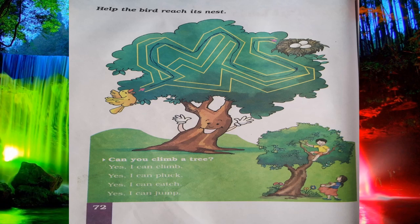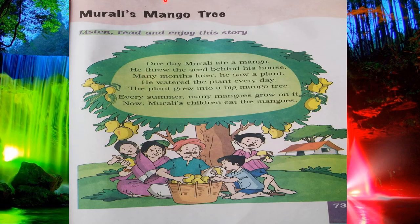Next there is again a poem — it's about Murali's mango tree. Here you can see there is a man, a fruit seller, whose name is Murali, and he planted a mango tree. In this picture you can see Murali planted a mango tree. You have to read and enjoy the story — there is a short story about Murali and his mango tree.